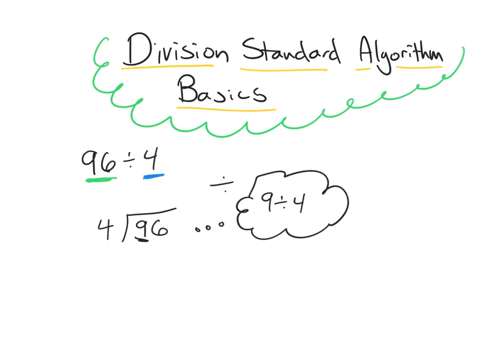One way you can think of this is: how many groups of 4 could I make if I had 9 dots? Another way is: how close can we get to 9 using multiples of 4 without going over? Looking at the multiples of 4 — one group of 4 is 4, two groups is 8, three groups is 12 which is too much — so it's going to be two groups of 4. I'm going to write that 2 above the 9, keeping everything in place value order.